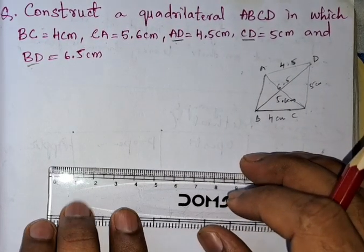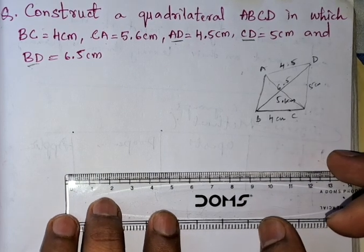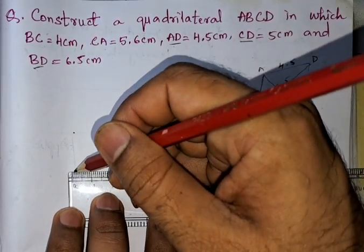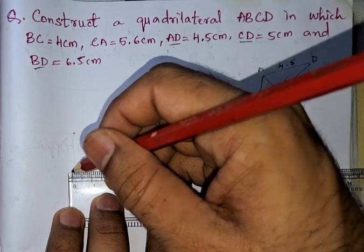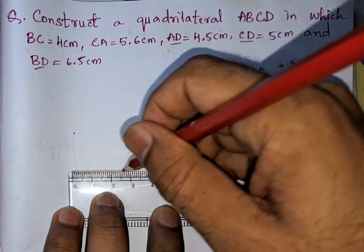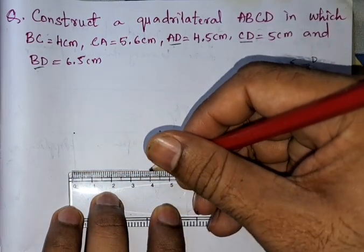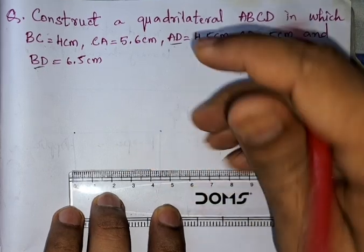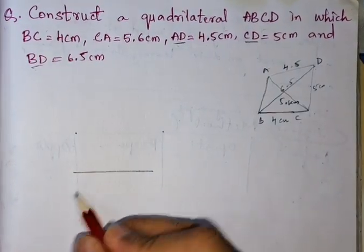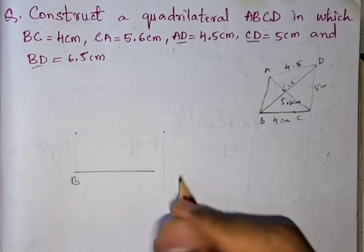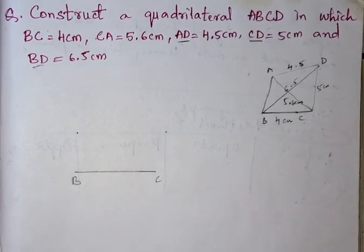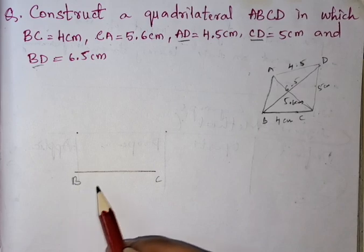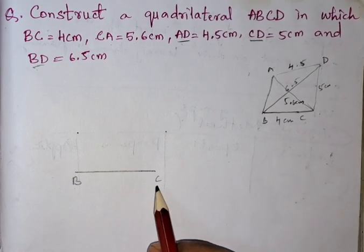First we will draw 4 centimeters — this is our 4 centimeter line segment. This is B and C.